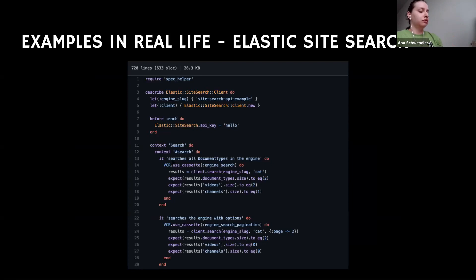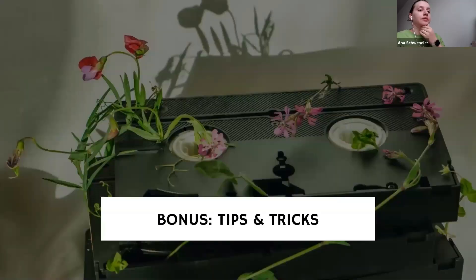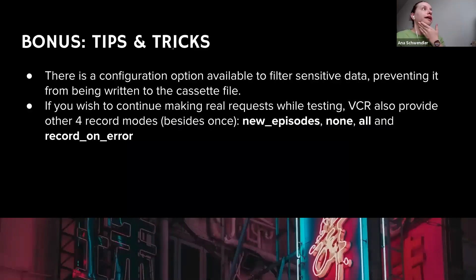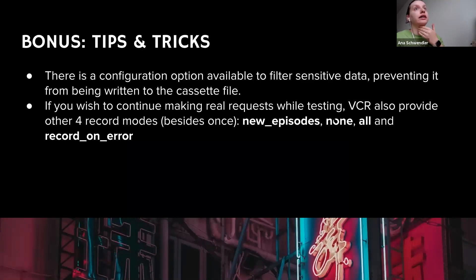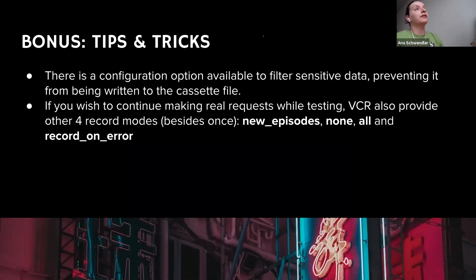I wanted to show the cassettes — I forgot — but it is on my article for later reference. The tips and tricks I have are: you can filter sensitive data, which is just an option you can add to the VCR configuration, and it prevents sensitive data from being written to the cassette file — it's easy to use. If you want to continue making real requests, there are also options: there is the default one, which creates once and then uses forever, but you also have new episodes, none, all, and record and error. Very flexible, I'd say.